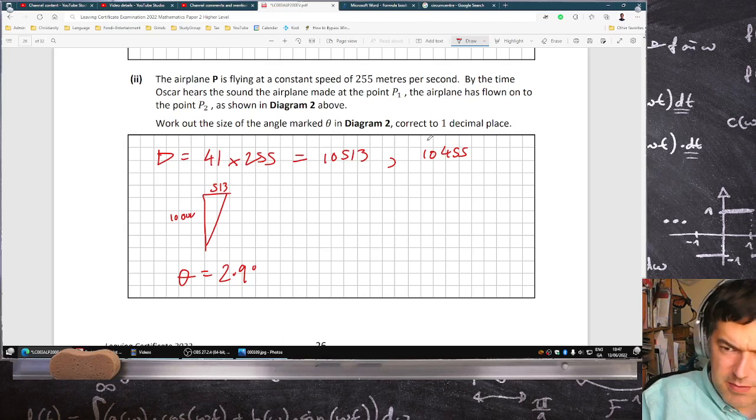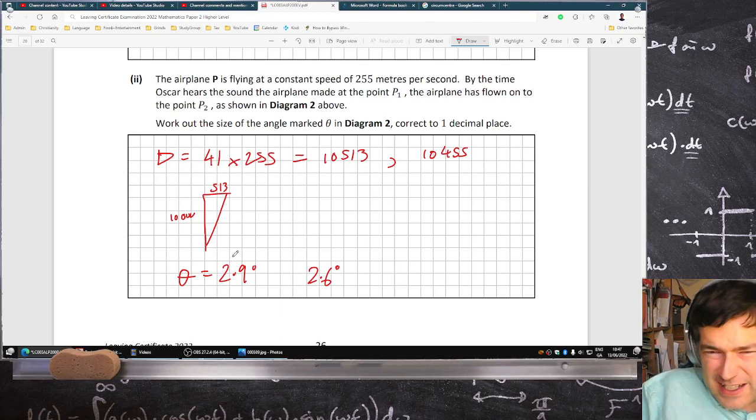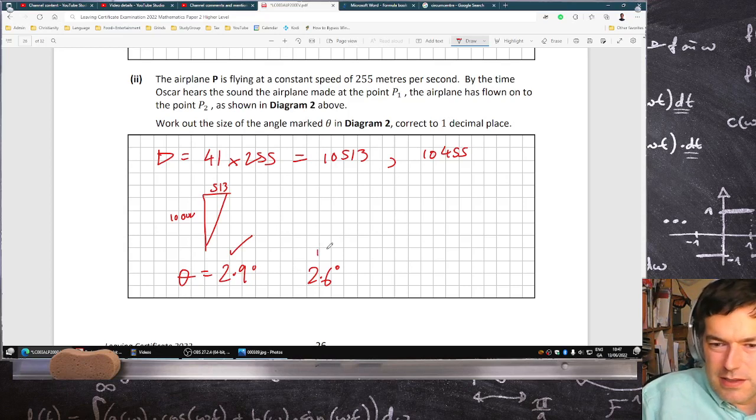By the way, if I use the other number, would it have affected the decimal answer? Oh yeah, it would have a tiny bit: 2.6 degrees. So technically speaking, this is more accurate, but I think when they usually ask you to round, they like you to use the rounded answer. Depending on if you use the rounded answer previously or not, you either get 2.6 or 2.9.